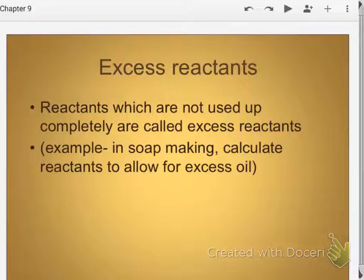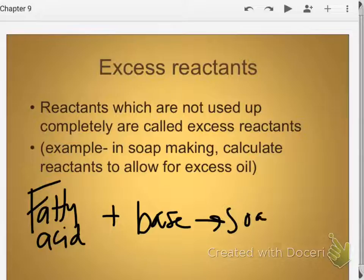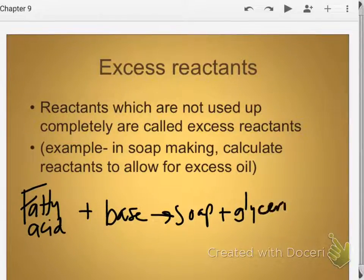If we have a reactant which is not used up completely, it's called an excess reactant. We have it in excess. We are going to be making soap next week. Has anybody ever made soap? You guys said you made it in junior high or middle school. What is soap? Soap is actually the product of a chemical reaction. It's a specialized neutralization reaction between a fatty acid and a base, which gets you as products soap and glycerin.